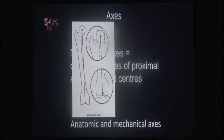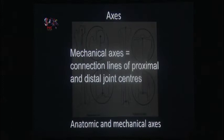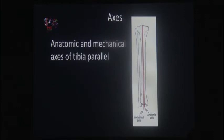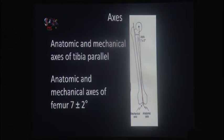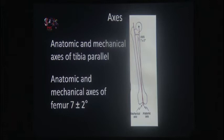In osteotomy planning we focus on mechanical axes, not anatomical axes, because what we change is mechanics. The mechanical axis is simply the connection between the previously defined joint centers — connect the proximal and distal centers of the femur, and the proximal and distal centers of the tibia. At the tibial side, mechanical and anatomical axes are essentially parallel, so it doesn't matter much. At the femoral side, the femoral neck creates a difference of roughly six to seven degrees between the two axes.